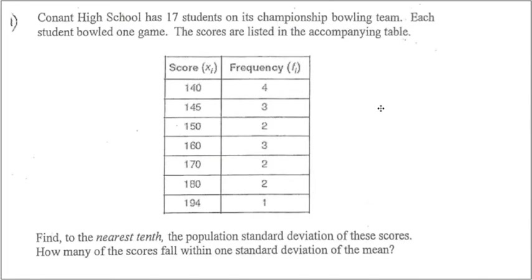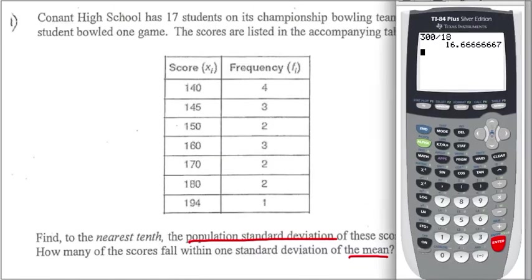Hello, so we'd like to look at some review questions on statistics from Algebra 2 Trigonometry. Here we have x values and frequency of those values. Now let us see what they're trying to find here. Population standard deviation of these scores and how many scores will fall within one standard deviation of the mean. Then what we need to do is put them into the calculator first.